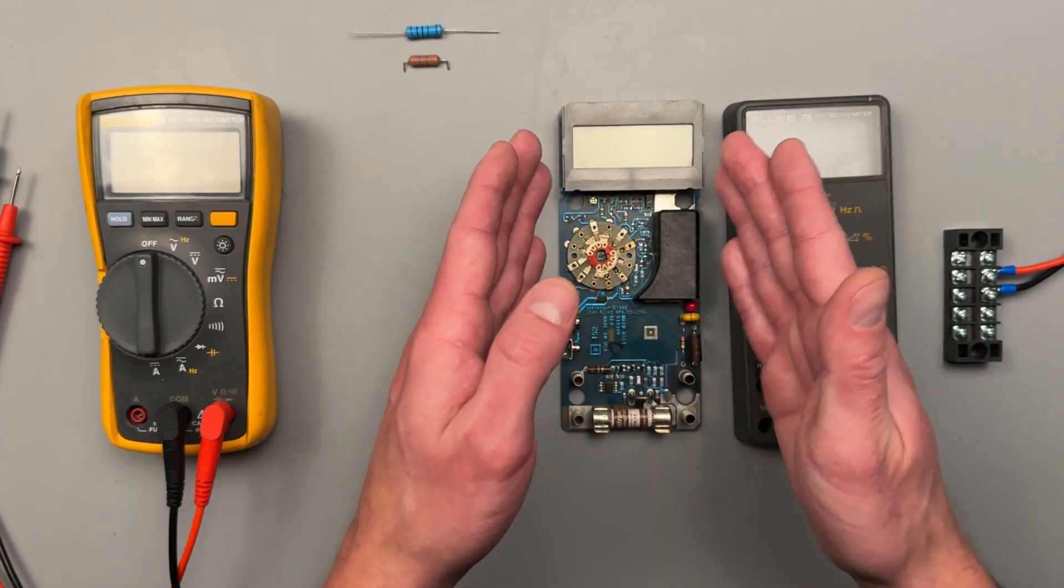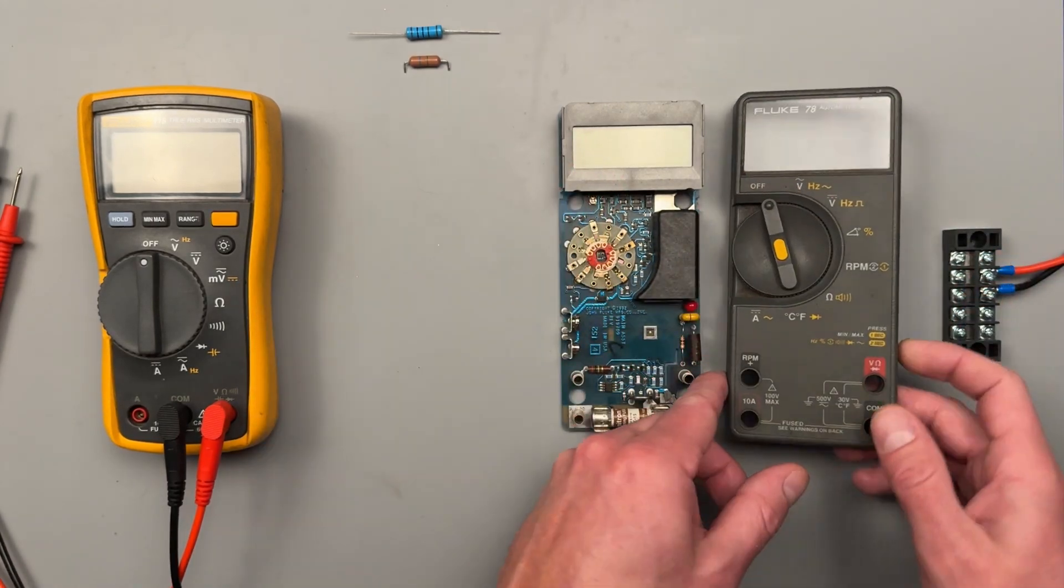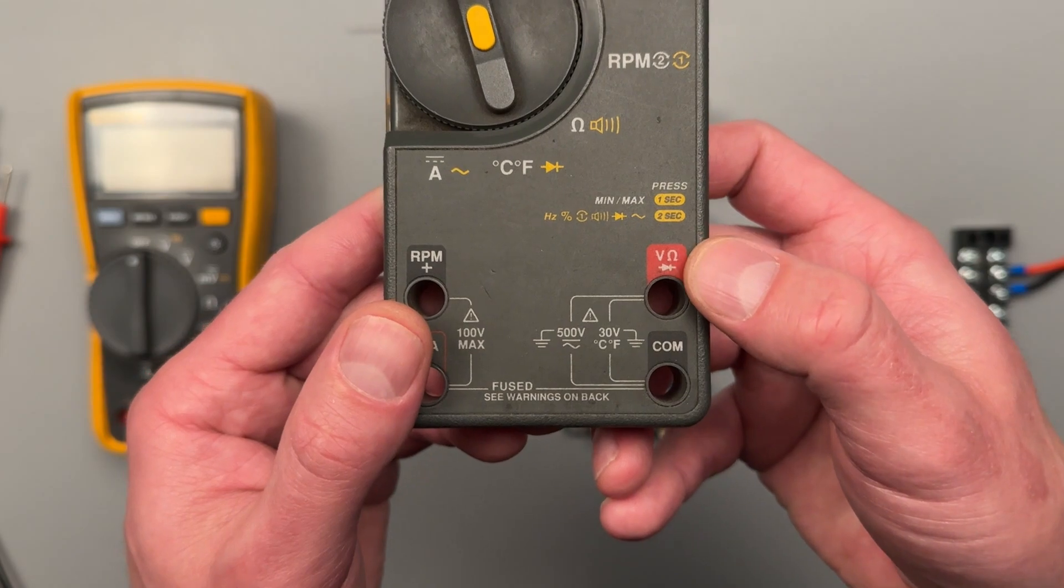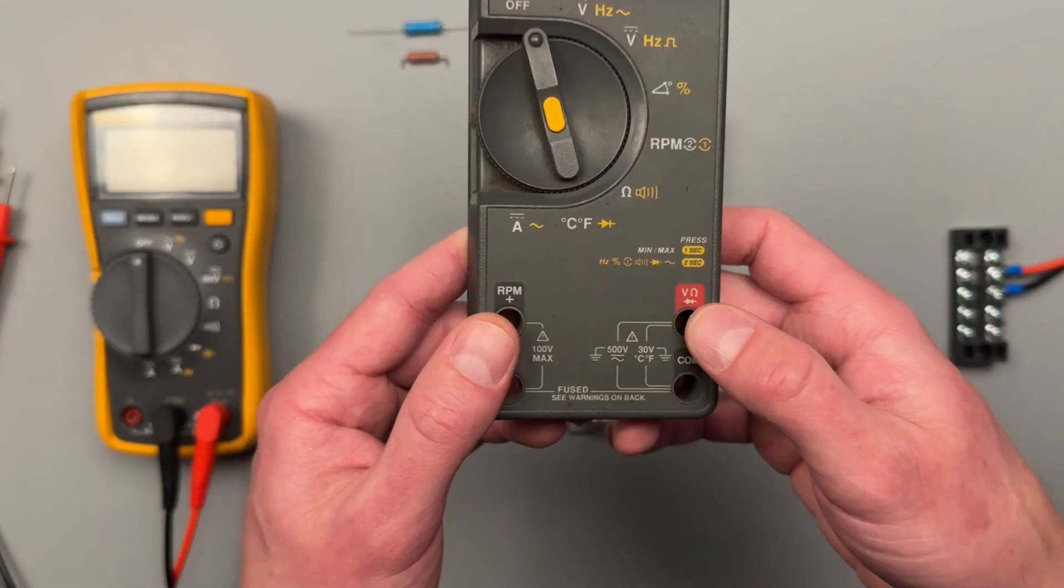After doing some basic testing with the meter, I found that it wasn't reading any voltages. That was kind of my first indication of, okay, volts ohms and com port are most likely some kind of fault is going on there.